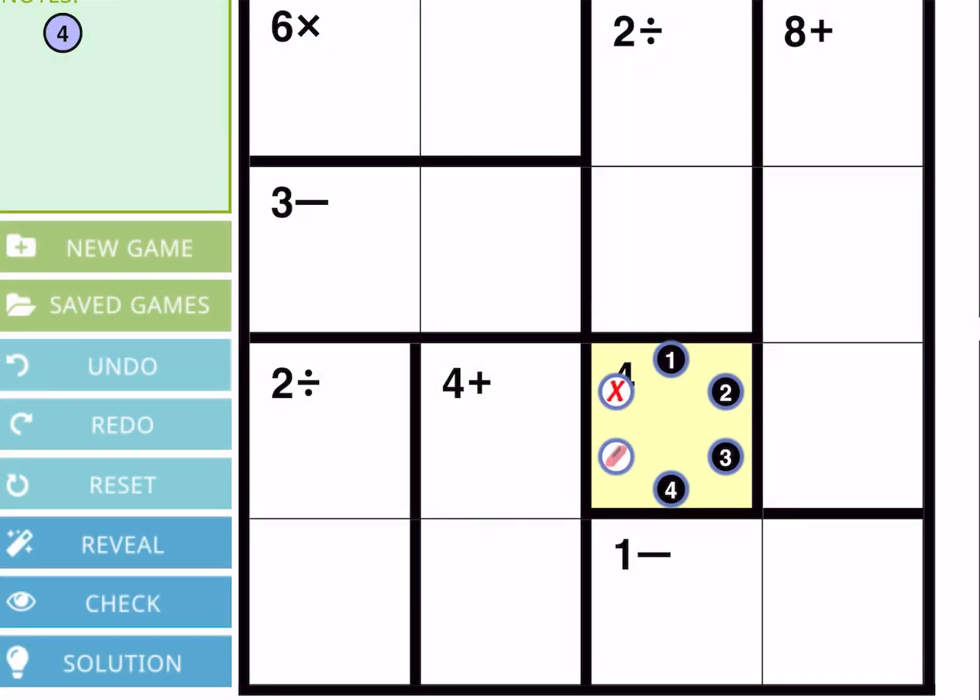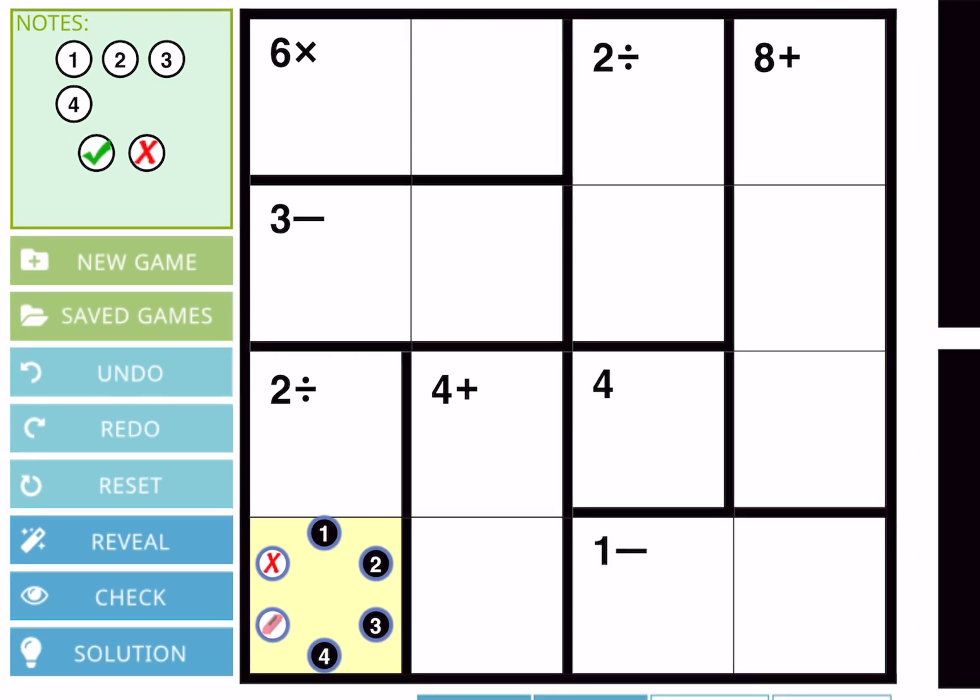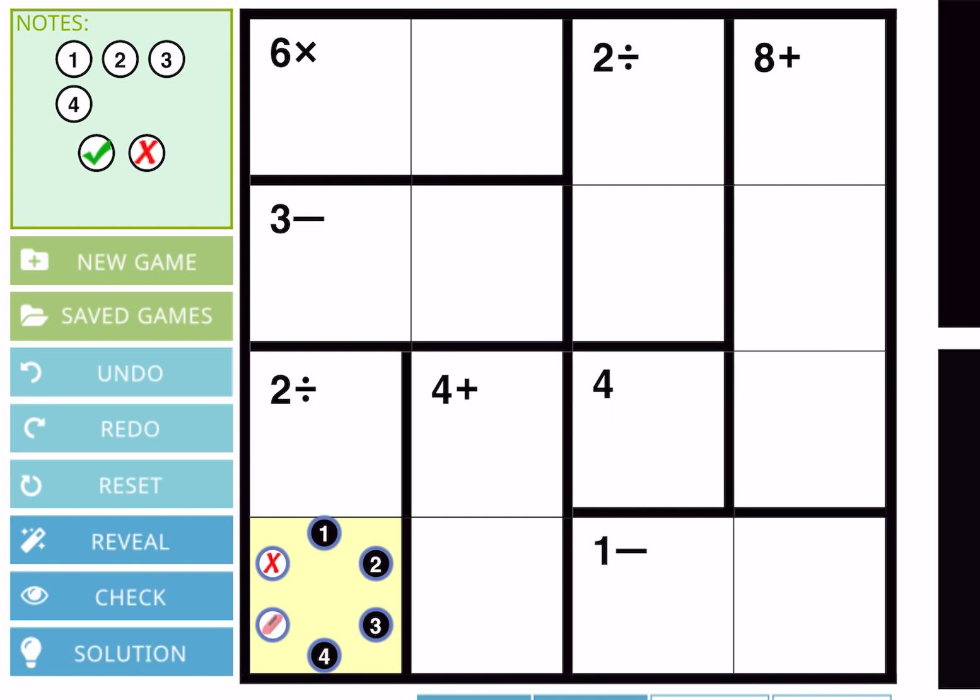Hello everyone, welcome back to my channel. Today we are going to solve a KenKen 4x4 puzzle. In KenKen, in horizontal or vertical columns there should be one to four numbers and the numbers should not be repeated.